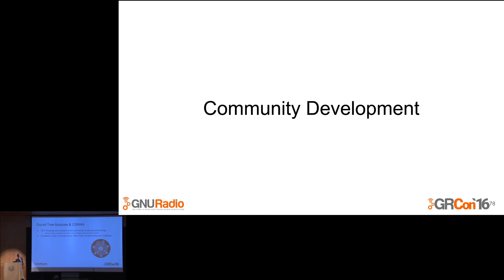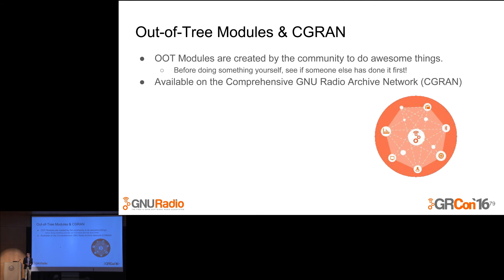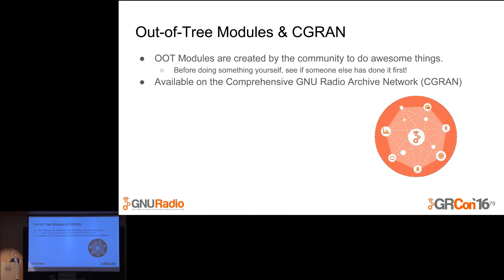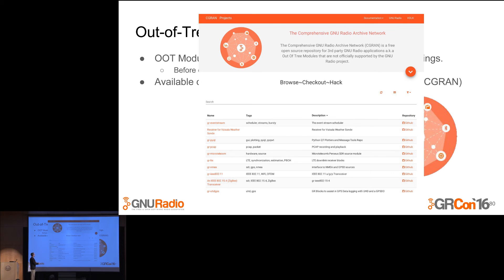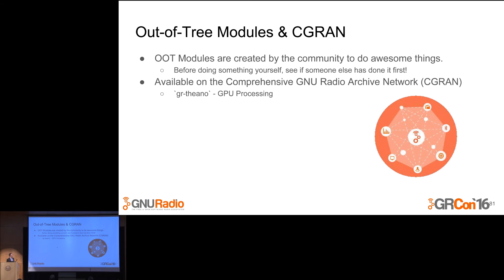Community development — I went through a lot of blocks we have in our primary distribution. Chances are, if we don't have a block you need, somebody else has also wanted that block. We call these out-of-tree modules. They are created by the community and do awesome things. These are all hosted on a website called CGRAN — the Comprehensive GNU Radio Archive Network — a play on CPAN and a dozen other open source archive network projects.